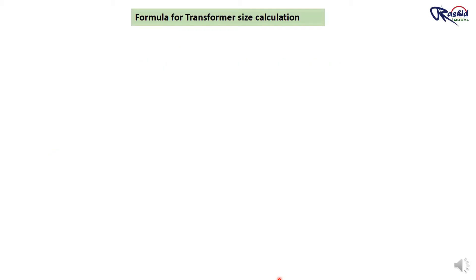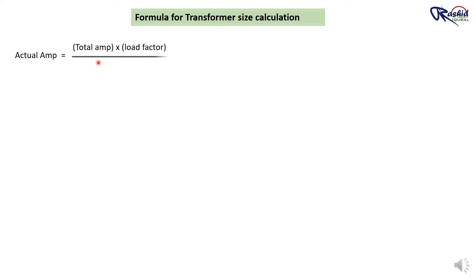The formula is: Actual Ampere = Total Ampere × Load Factor ÷ Diversity Factor. It sounds a bit complicated, but trust me, it's easy when you break it down. Let's look at what each part means.